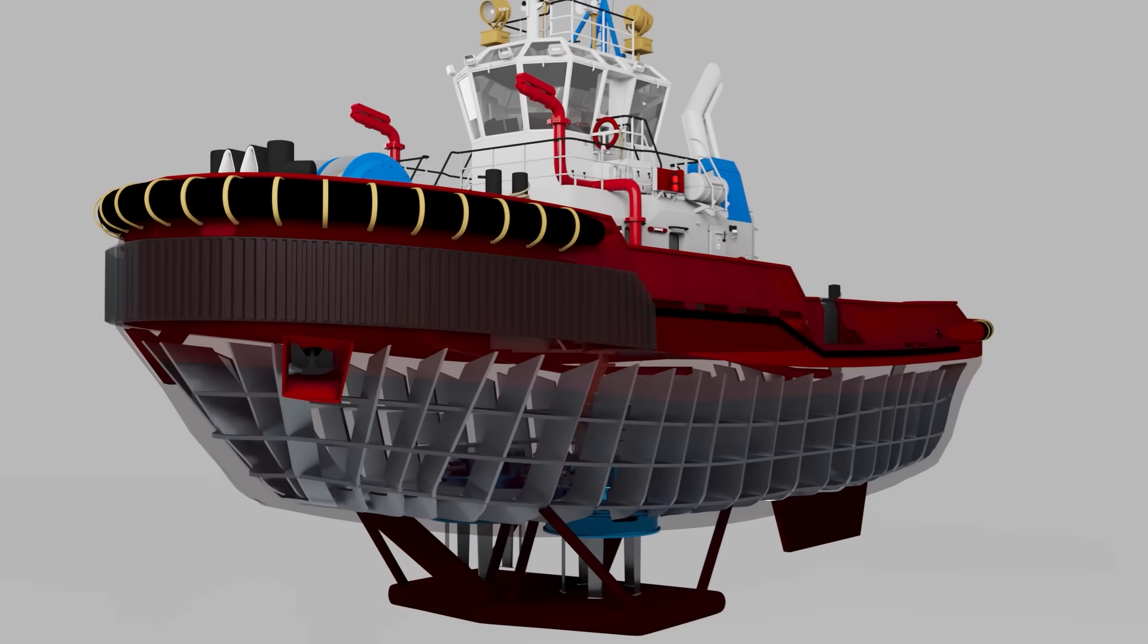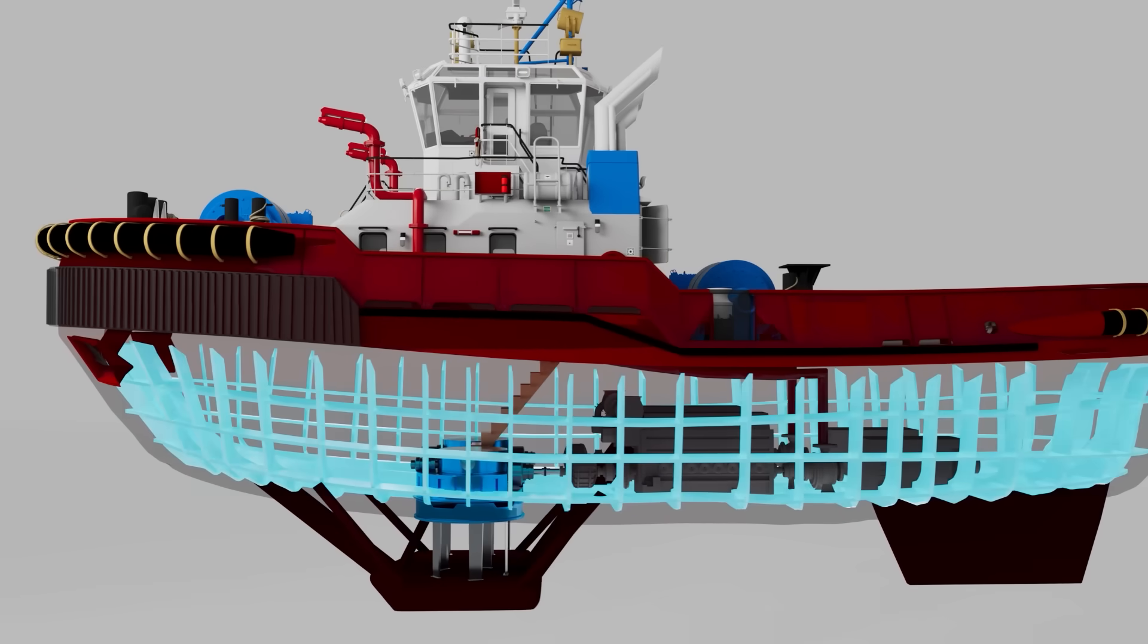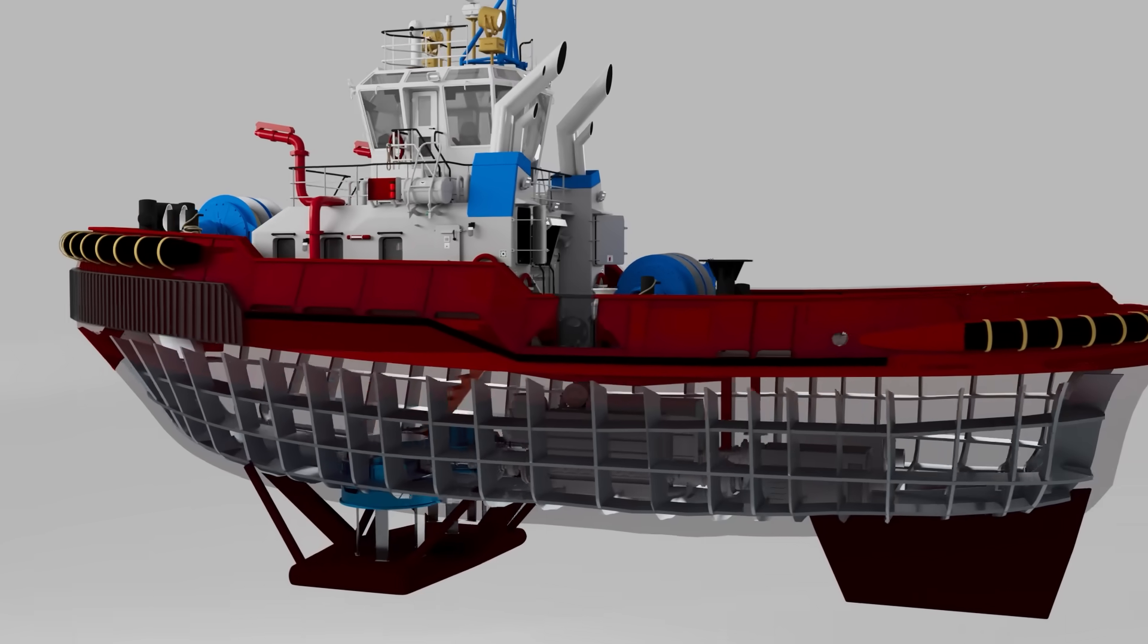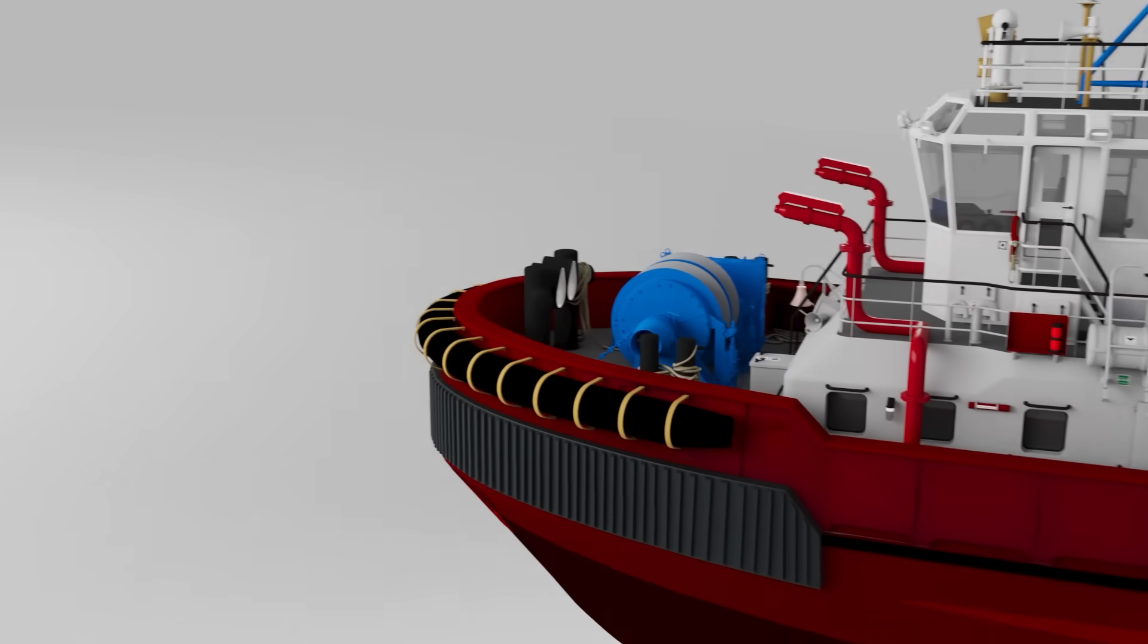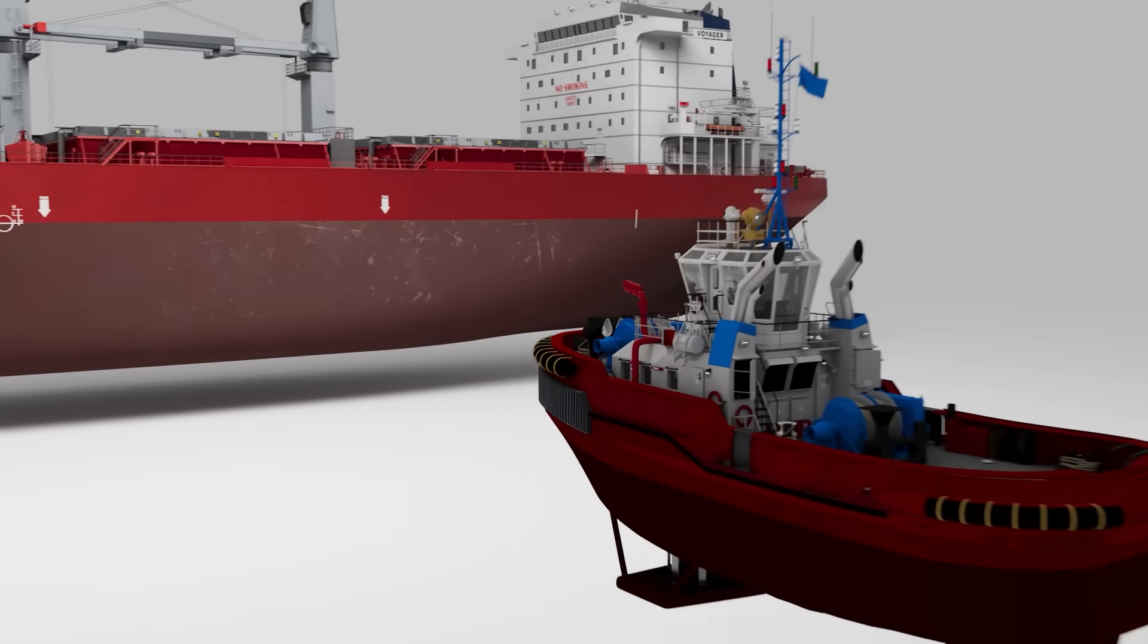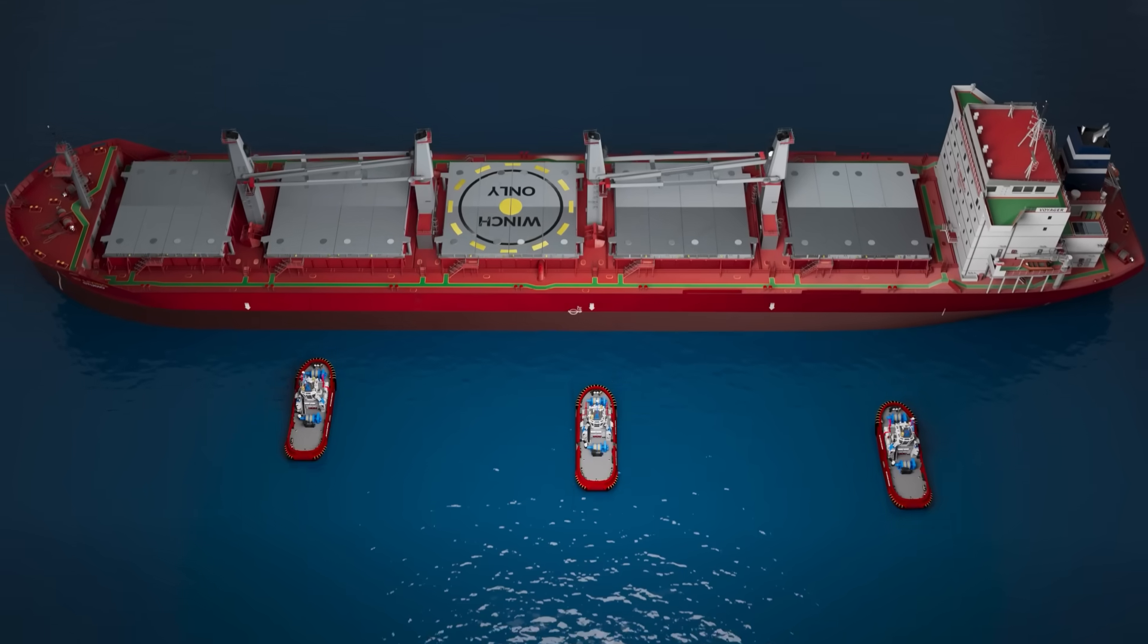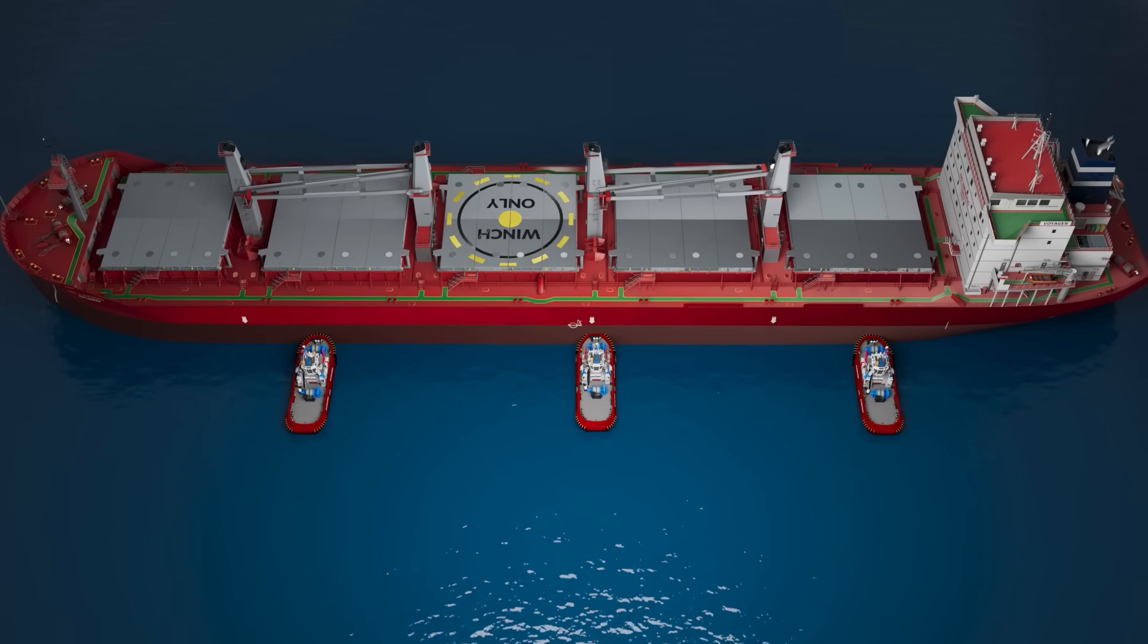The hull is made of thick steel with extra strong frames. The bow is especially tough with reinforced steel to tow and to take hits when working alongside giant ships.